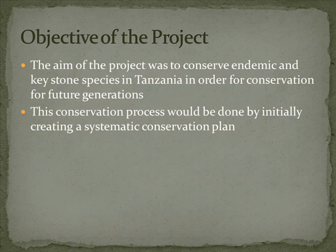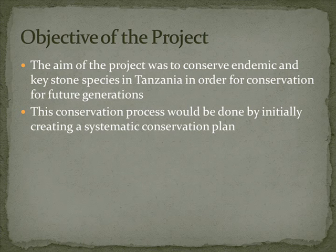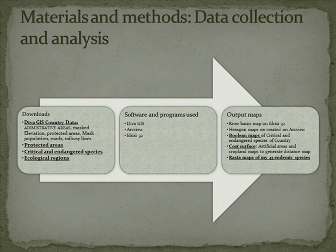The objective of this project was to conserve endemic and keystone species of Tanzania so as to prevent possible extinction by conserving the habitats they belong to. This is to be done by creating a systematic conservation plan where additional conservation areas are added, looking at the endemic species' current habitats.